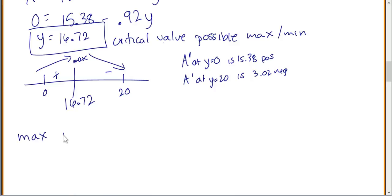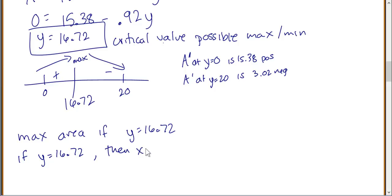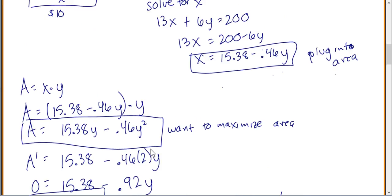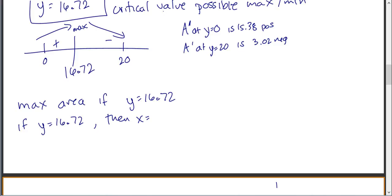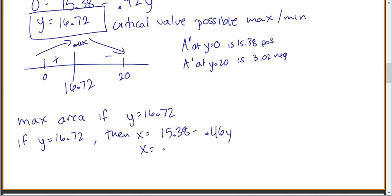We have our max area when y equals 16.72. Since we need the actual dimensions, we find x by going back to our equation: x = 15.38 minus 0.46 times y. Plugging in y = 16.72 gives x equals 7.69.